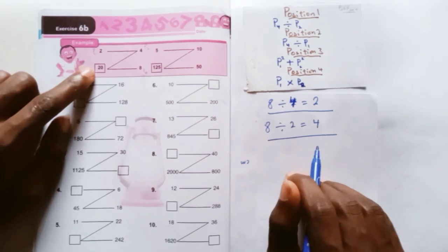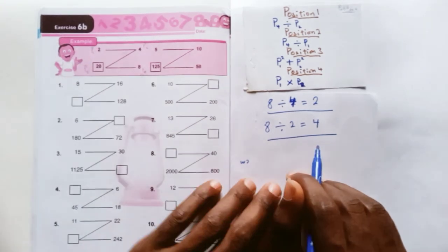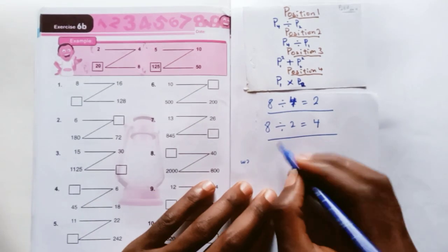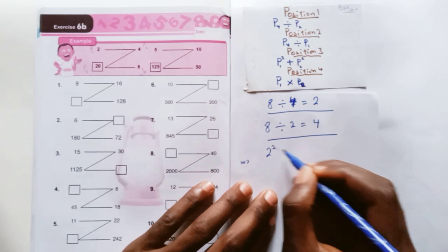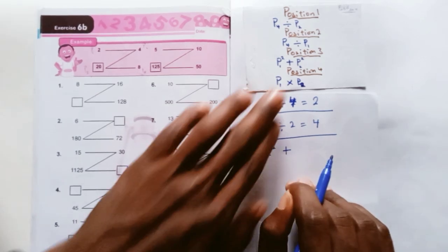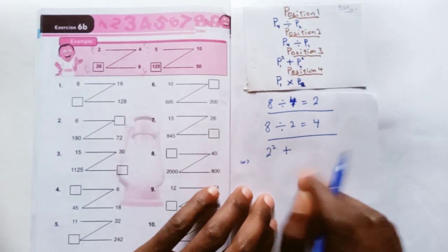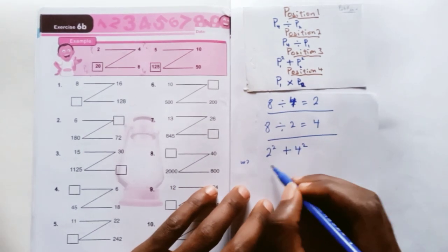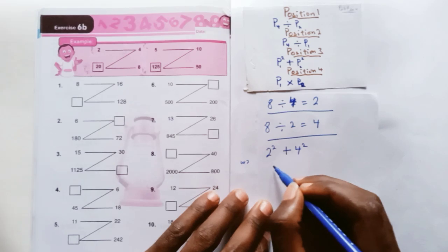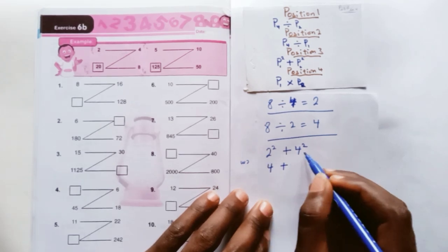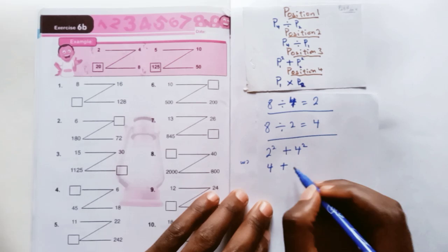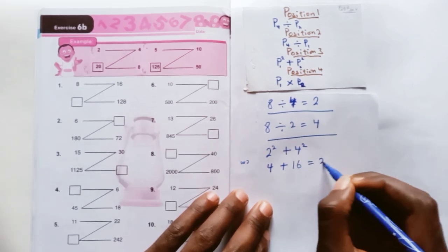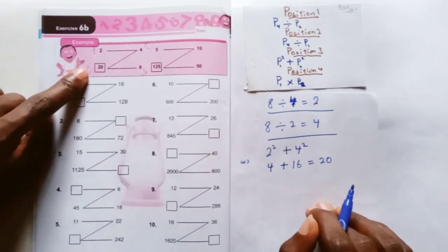Position 3, which is 20. How do we get that 20? We're going to say P1, that's the 2, squared. So 2 raised to the power of 2 plus P2 squared, that's 4 raised to the power of 2. So 2 raised to the power of 2 is 2 times 2, which is 4, plus 4 raised to the power of 2 is 4 times 4, which is 16. So 4 plus 16 is 20. That's how we get the 20 here.